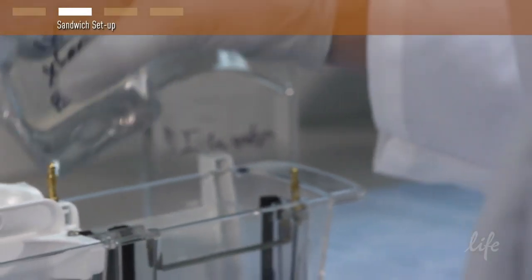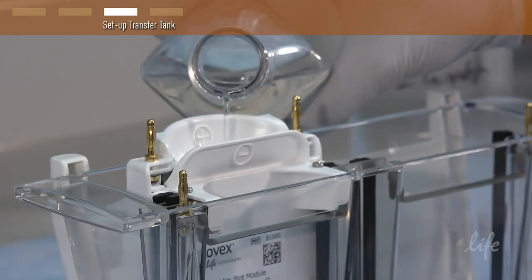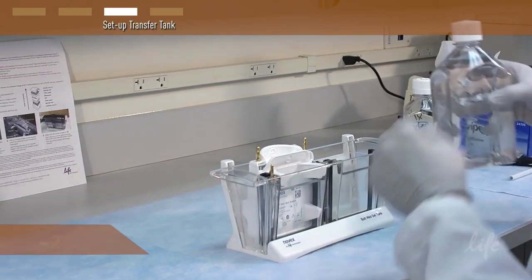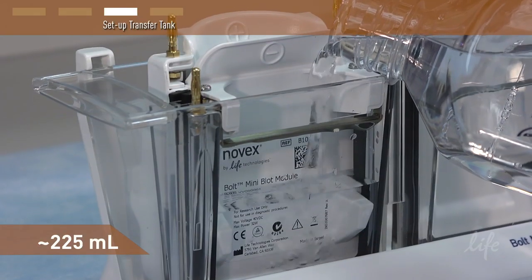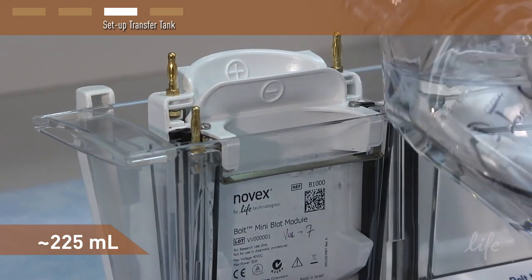Extra transfer buffer can be added to the module core to submerge the sandwich, but don't fill above the gasket. Add deionized water or transfer buffer, about 225 milliliters, to the chamber just below the electrode bar.